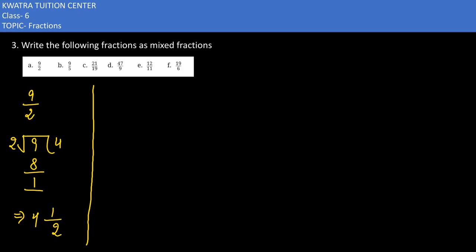Next we have 9 by 5. You can divide it, so you would have 1 here, 5 here, and 4 would be the remainder. How do you mention this? 5 would be the denominator, here I would have 1, and here is 4, so you get 1 4/5.